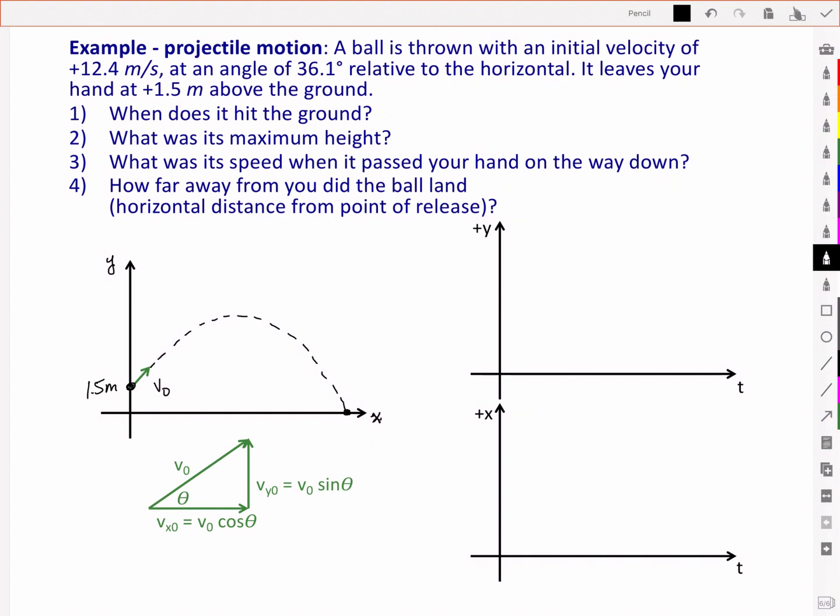The second thing to do is to break down the velocity into components, to resolve it into its components. So we've got that initial velocity of 12.4 meters per second and we're going to resolve it into its x and y components. That's simply a positive 12.4 meters per second times the sine of 36.1 degrees which gives us a positive 7.3 meters per second. The x component is a positive 12.4 meters per second times cosine of 36.1 degrees. And so there we get a positive 10.02 meters per second.